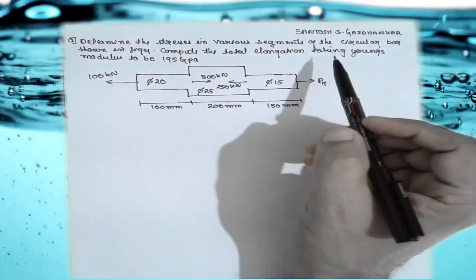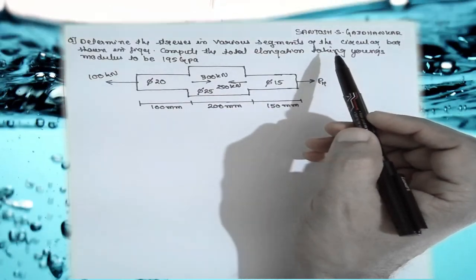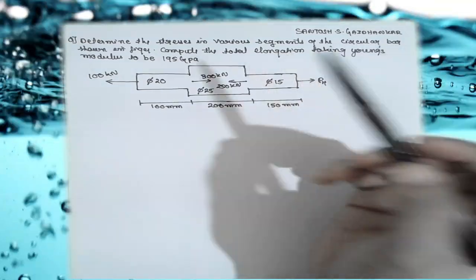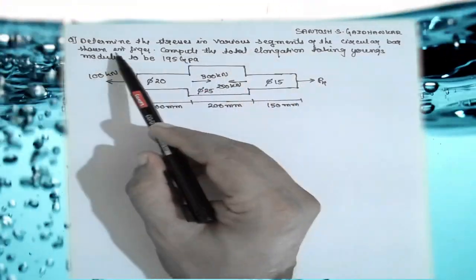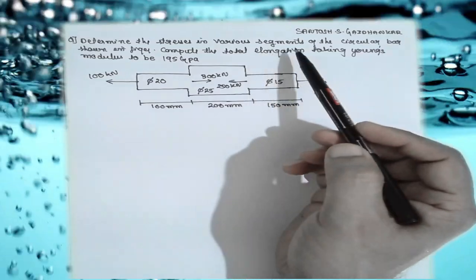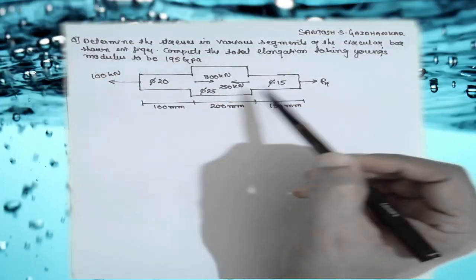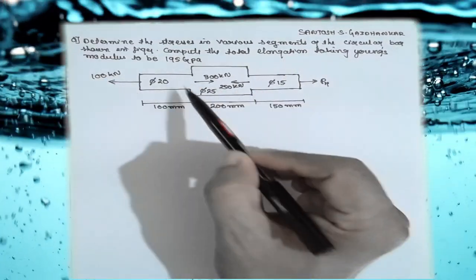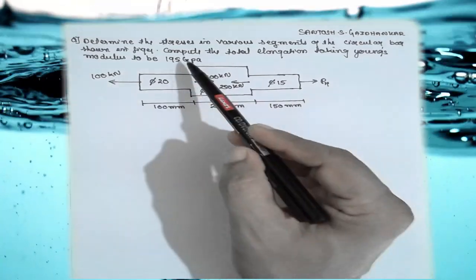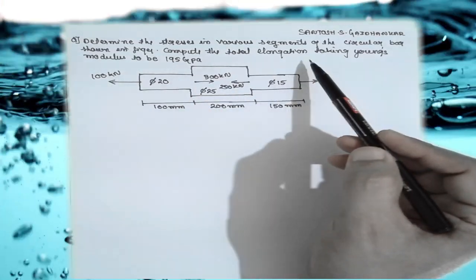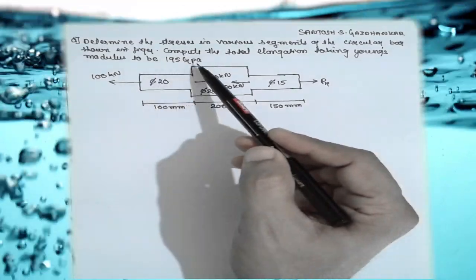Hi, I am Santosh Gaydankar. Today I am teaching you mechanics of materials — the principle of superposition problem. Determine the stresses in various segments of a circular bar shown in the figure. This is a stepped circular section bar. Compute the total elongation taking Young's modulus to be 195 GPa.